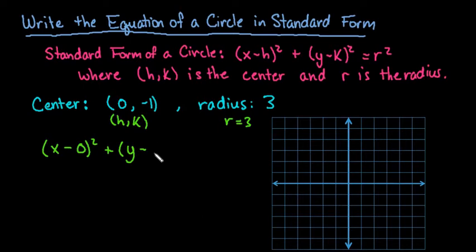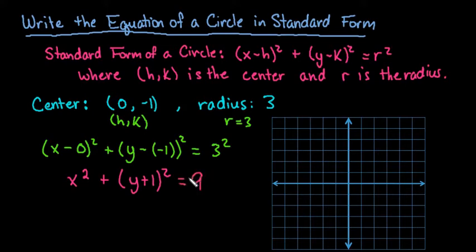Remember it's always y minus k, so I really have to do y minus negative 1 equals my radius squared. So now if we just simplify this, we would end up with x squared plus y plus 1 squared equals 9. So if it asks for the standard form of a circle, this would be your answer.